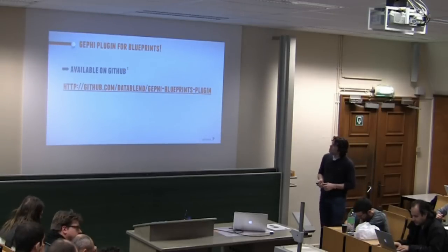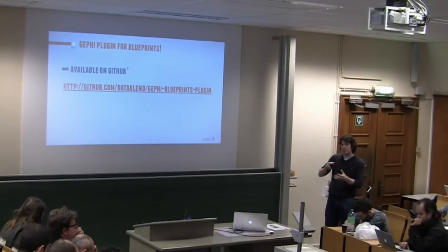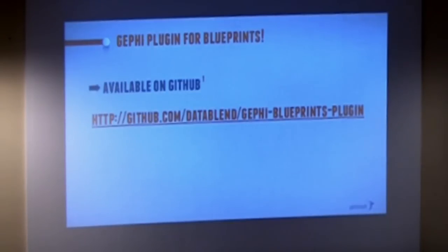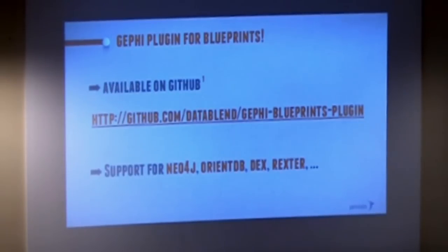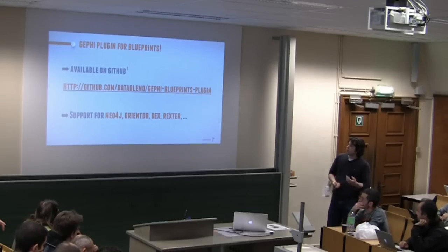When we started doing this, we were basically implementing the Blueprints API to visualize it in Gephi because at that moment there was no plugin available for connecting to graph databases that support Blueprints. We have a plugin for Neo4j, but not for Blueprints in general. So part of the plugin we open sourced - it's available on GitHub too. As a result, you can now access Neo4j as well as OrientDB, Dex, Rexster, and basically any graph database that supports the Blueprints API.